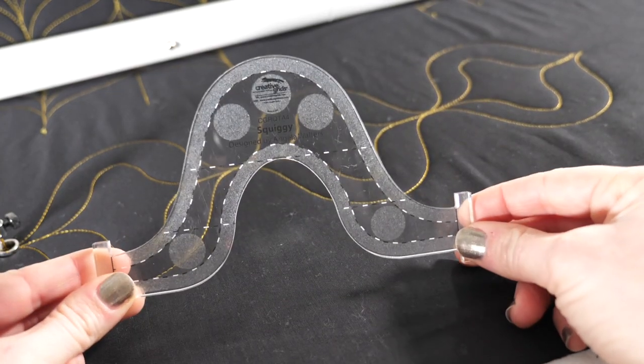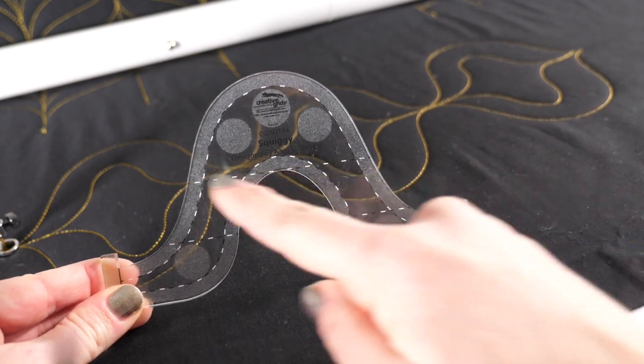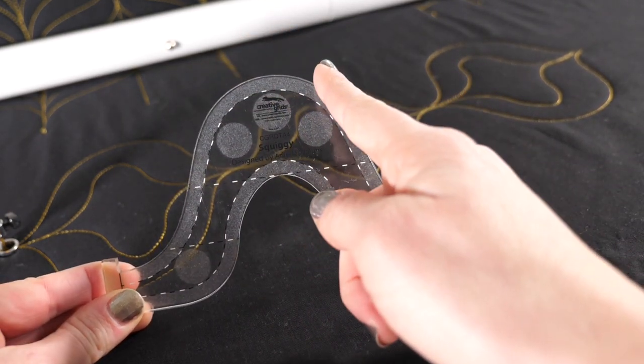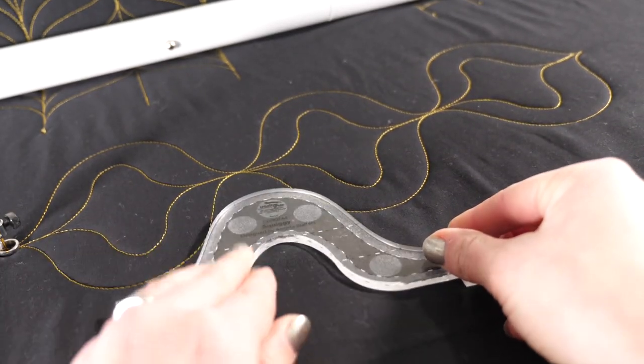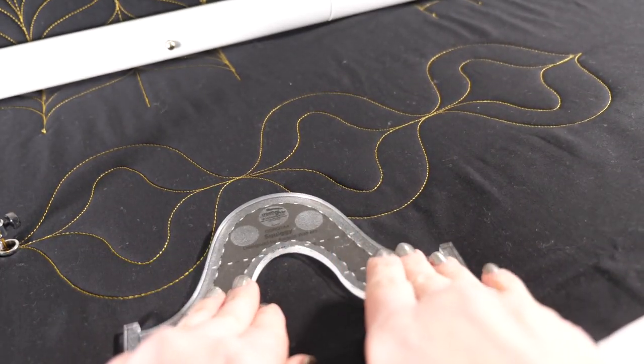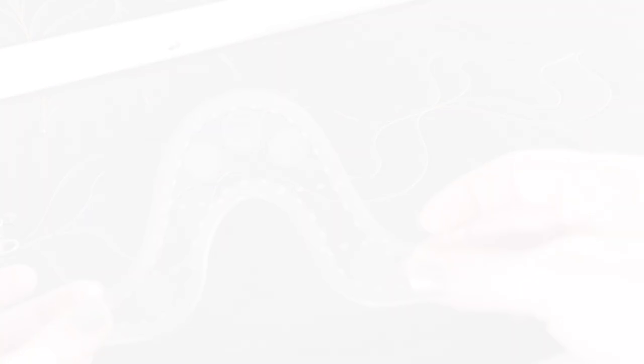The most important thing to think about when using curved rulers is that I'm going to take my time going around that curve. I'm going to make sure that I'm pulling that machine into the different sides of the curve and remembering that if I need to stop and reposition my hands, that I can. It's more important to take it slow than to go fast and not have good control of your ruler.